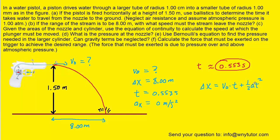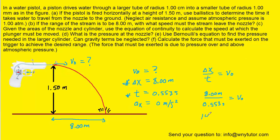We use the same kinematics equation as in part A. This time, since the acceleration equals 0, that term drops out. We divide both sides by t to isolate the initial velocity, then plug in the displacement and time. The initial speed in the x direction is 14.5 meters per second — the correct answer to part B.